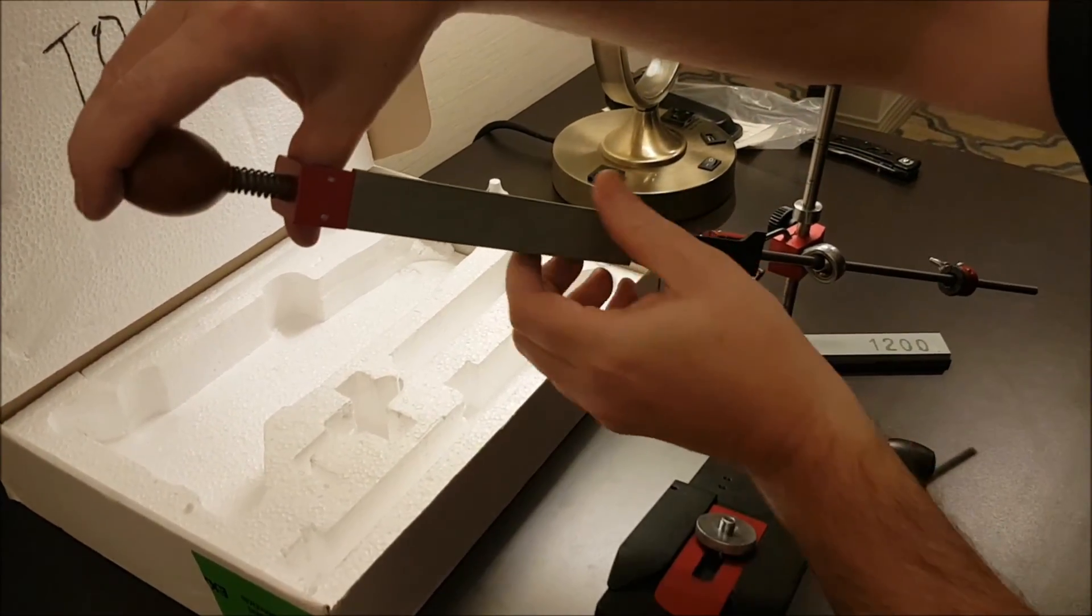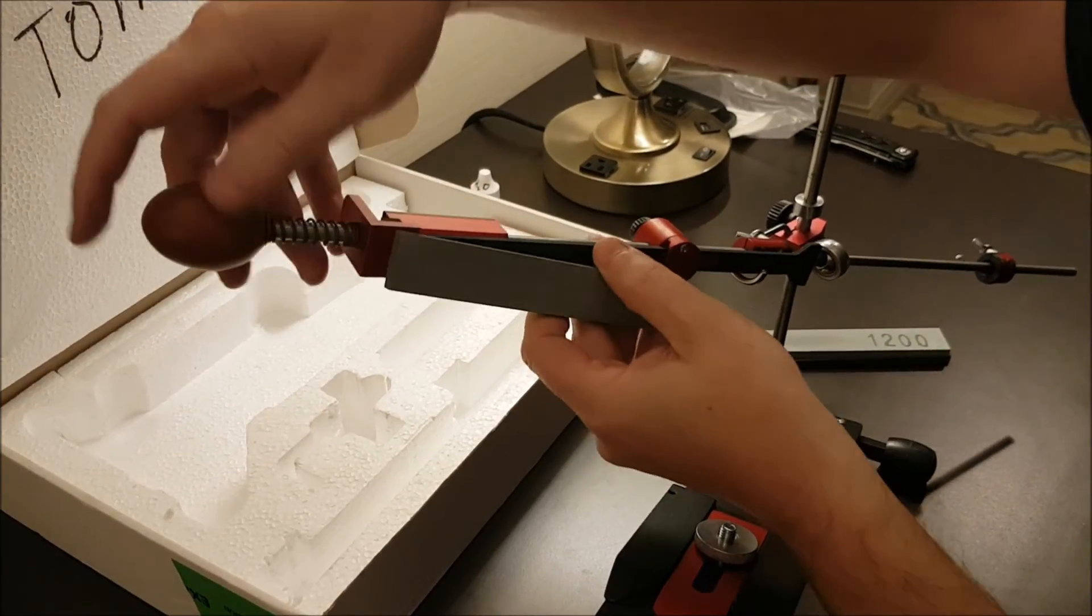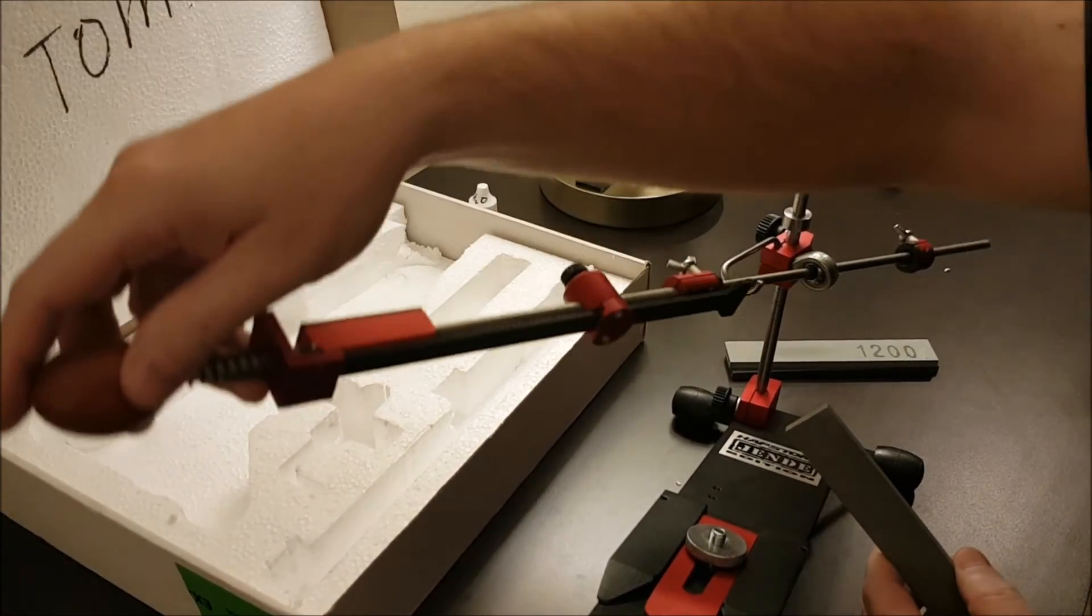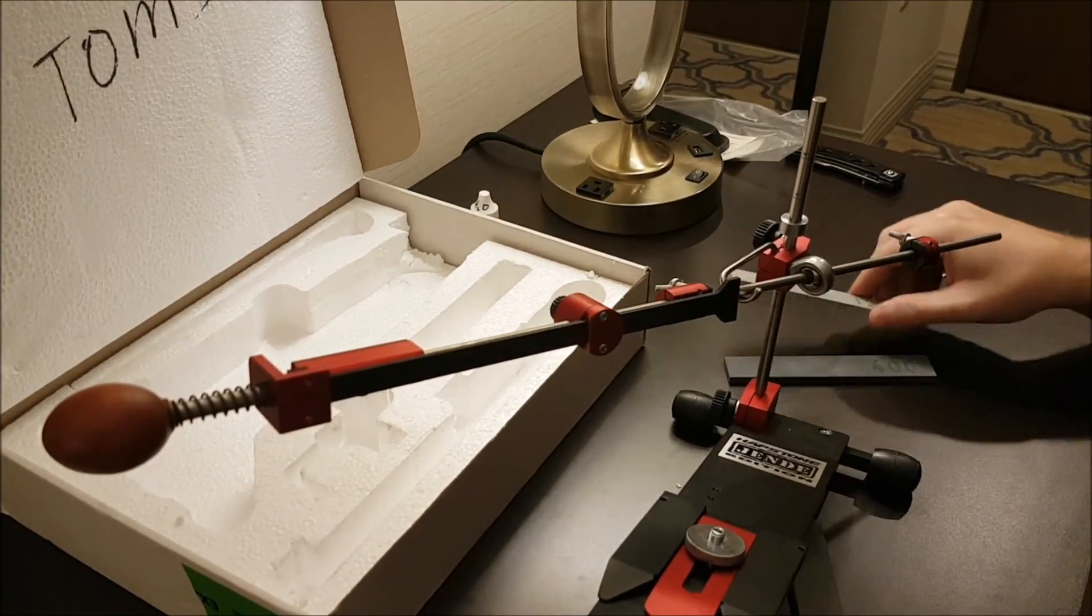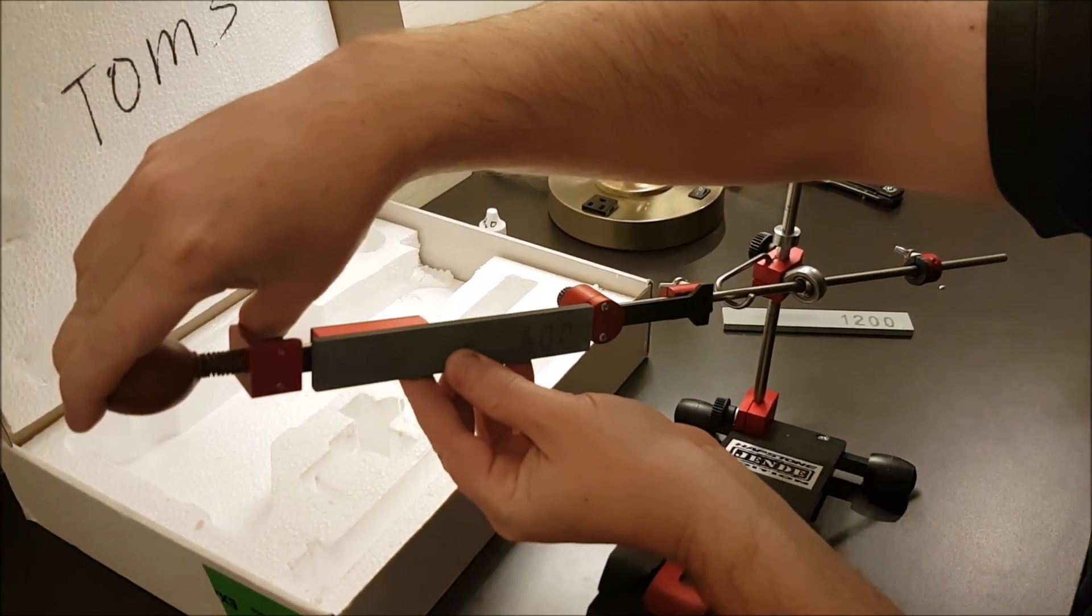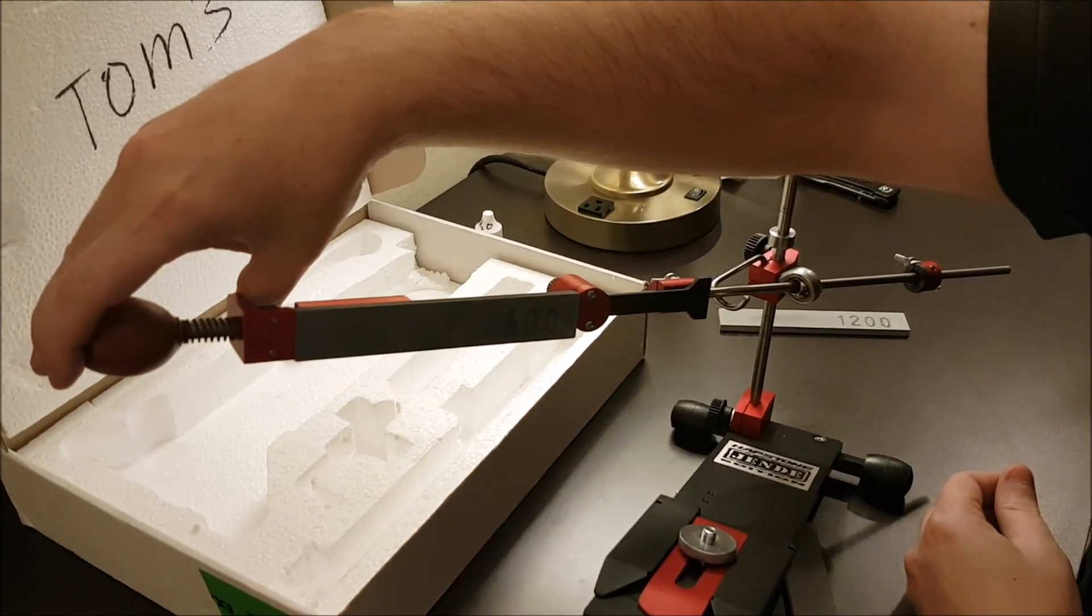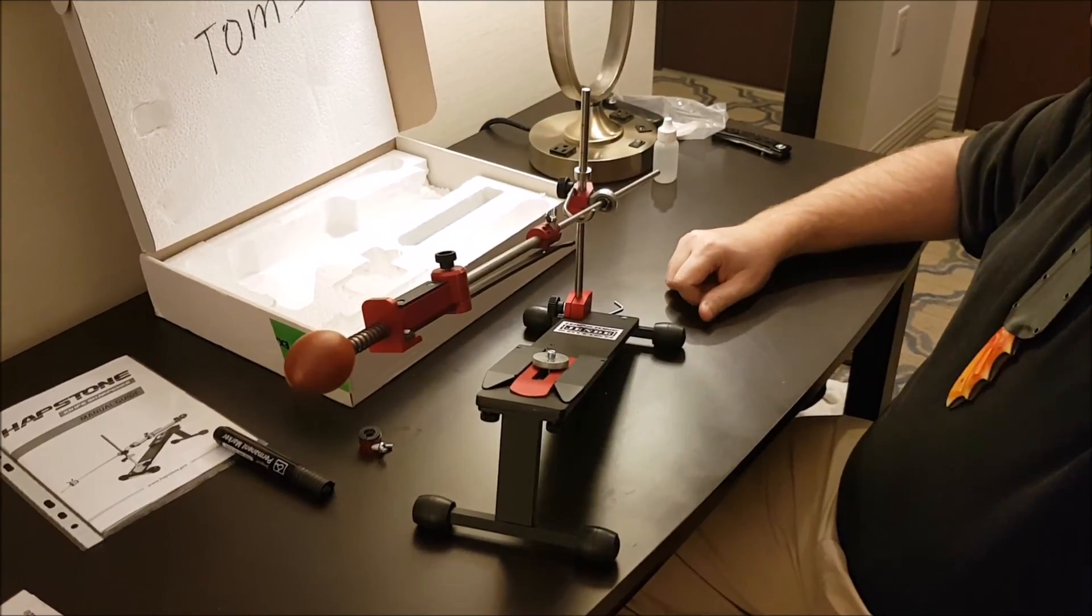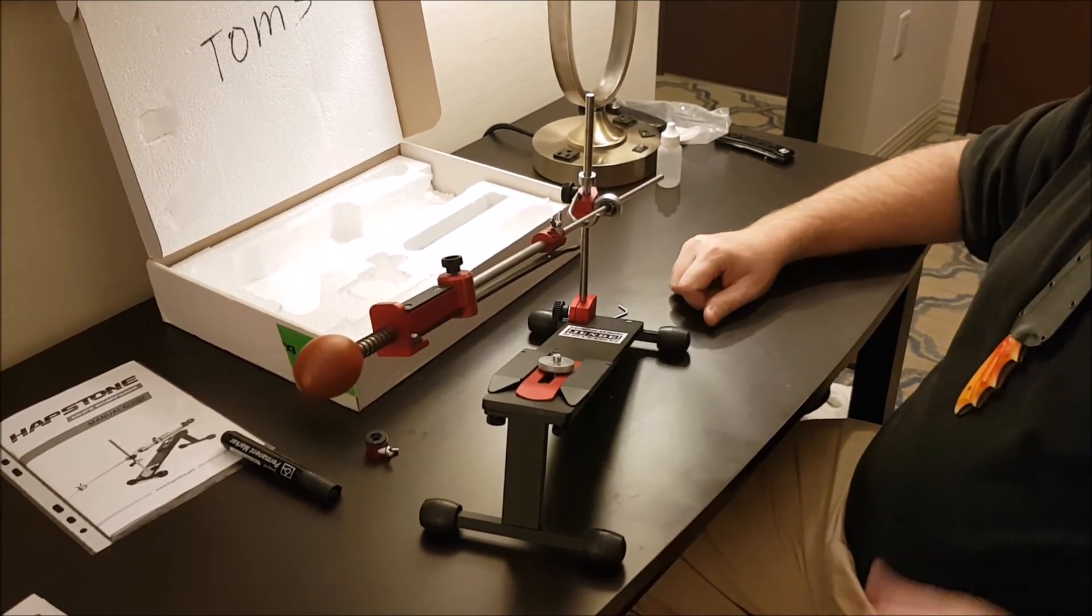And to switch it out, you're just pulling and move around the rest. Switch out, same thing. Stone is the same length. Pull the spring, pop it in. You're ready to go on the next angle. So this is it. You're set up and you're ready to go.